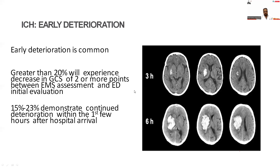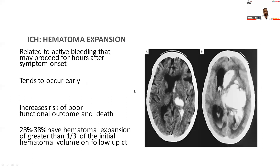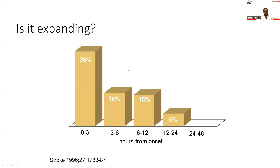Around 15–23% demonstrate continuous deterioration in the first few hours after the initial ICH CT. Hematoma expansion is due to active bleeding that may proceed for hours after symptom onset and increases the risk of poor functional outcome. About 28–38% have hematoma expansion of greater than one-third of the initial hematoma volume on follow-up CT. The percentage of hematoma expansion is highest at 0–3 hours and gradually reduces; after 24 hours, the chance of expansion is very low.